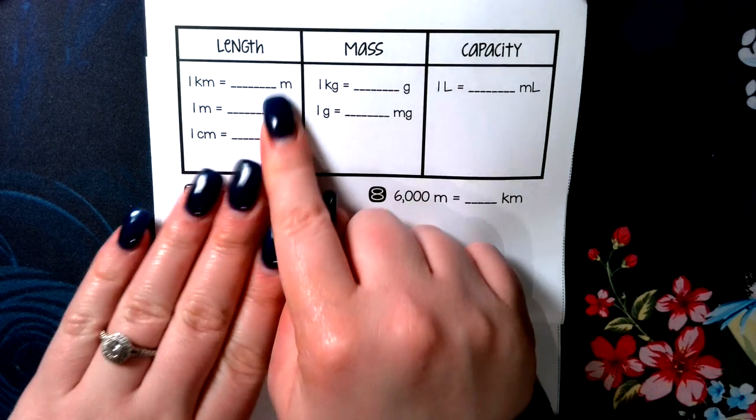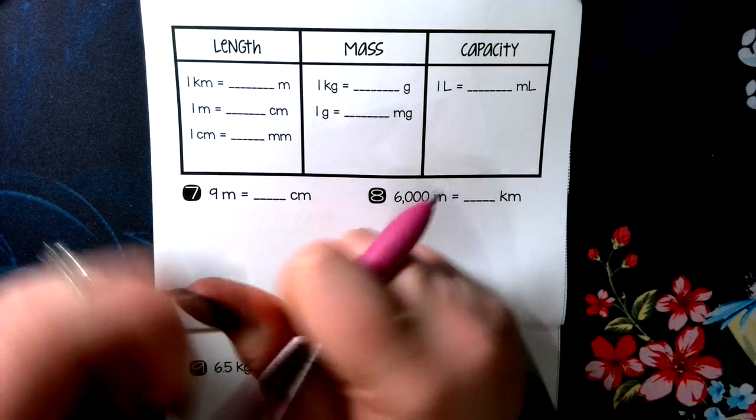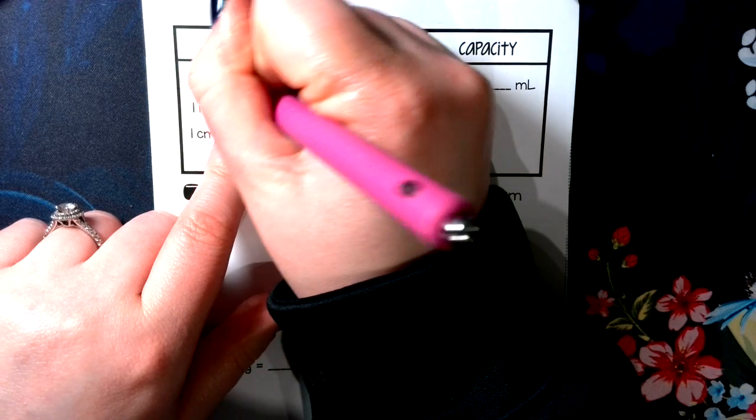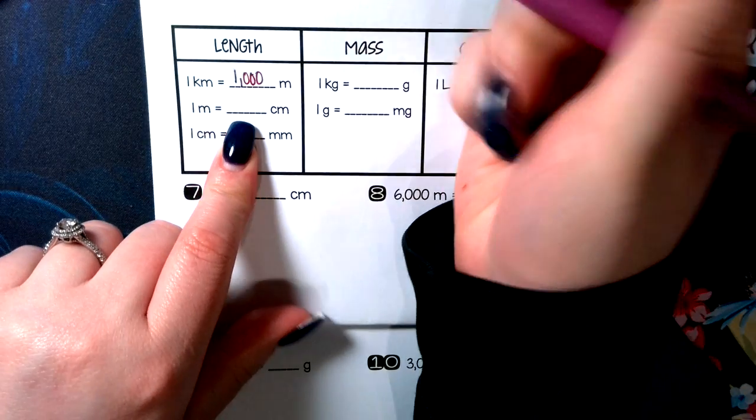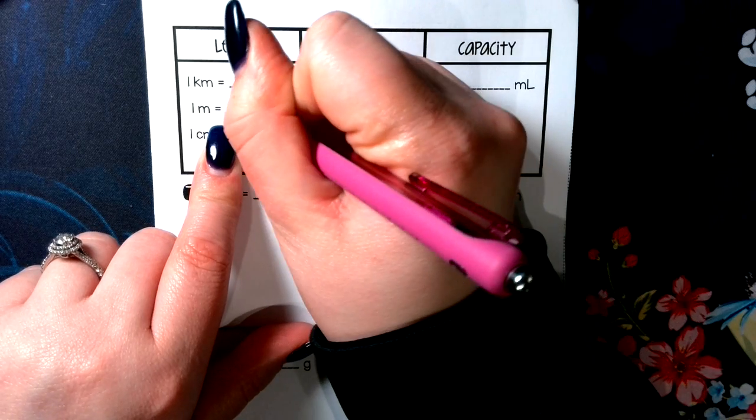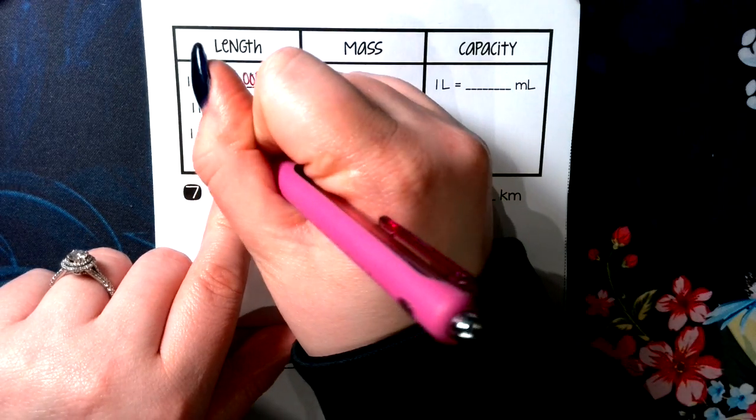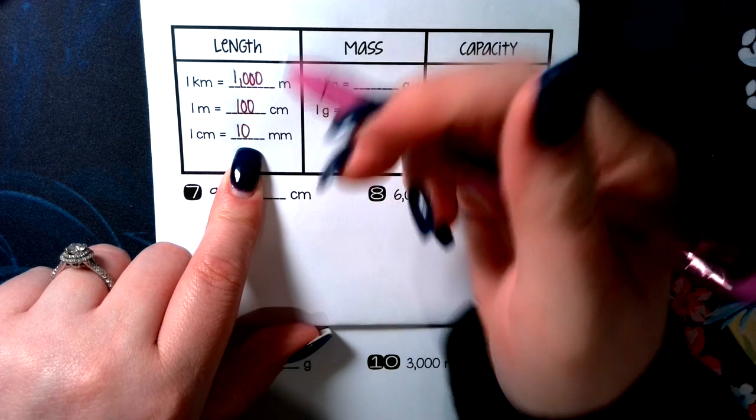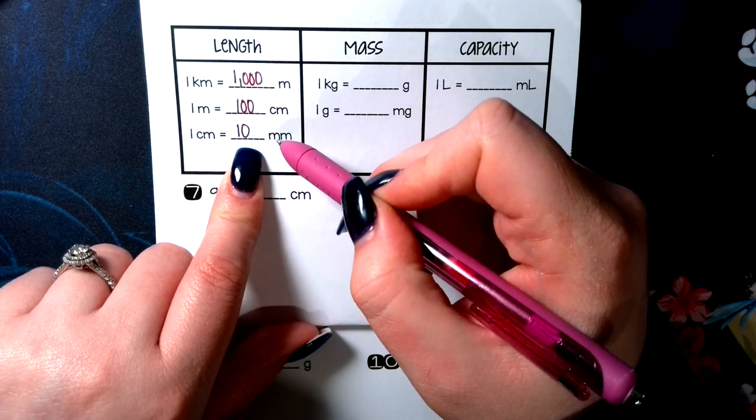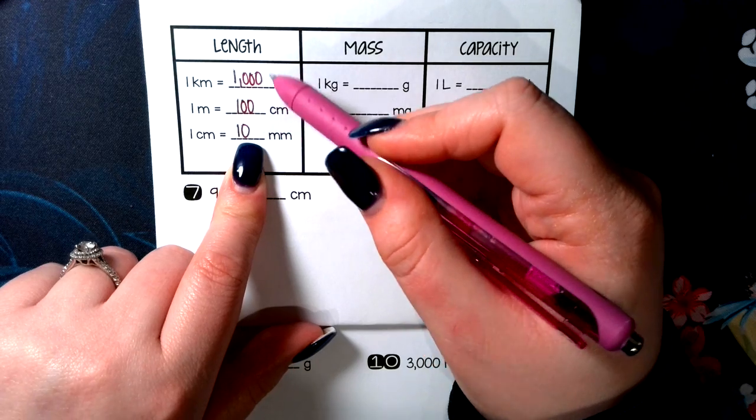So the length, one kilometer is 1,000 meters. One meter is 100 centimeters. And one centimeter is 10 millimeters. There are other lengths, but those are the basic ones that you're going to be seeing.